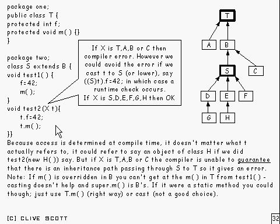But if X is of type T, then it doesn't help you at all. It will still give a compiler error, because the compiler is actually unable to guarantee that there is an inheritance path passing through S to T.